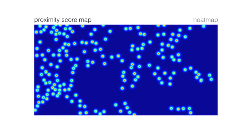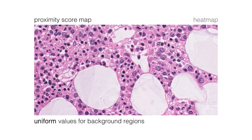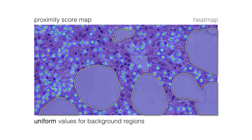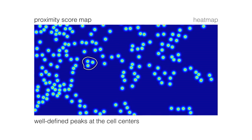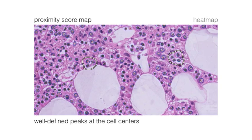These issues can be overcome by restricting the learning target and we therefore introduce a non-linear proximity score map. By defining this alternative learning target, we obtain uniform values for background regions. In addition, we can put more emphasis on the cell centers and get well defined peaks.